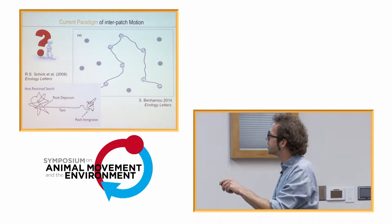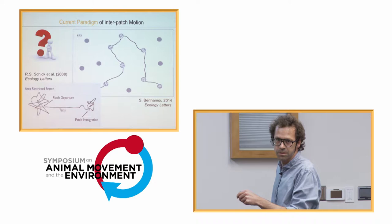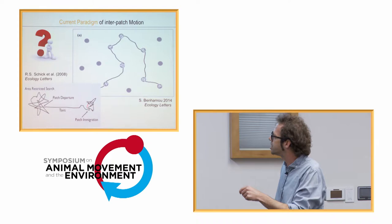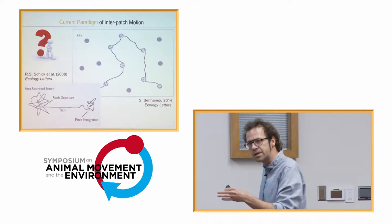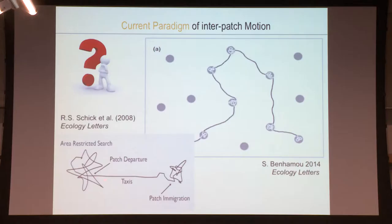Also interesting is this drawing by Schick and colleagues, which shows area-restricted search behavior within the patch, then a patch departure mechanism, patch immigration, and on the track between two patches they write 'taxes.' Taxes means the animal is fully informed about where the next patch is — the patch is releasing some cue generating a gradient, and the animal follows that gradient to the next patch.